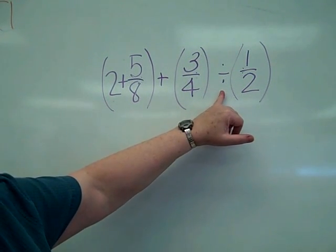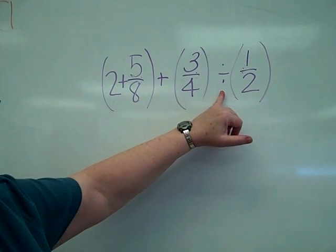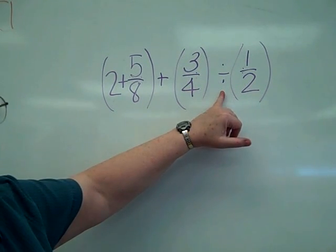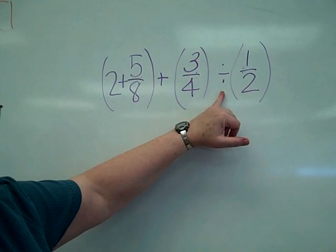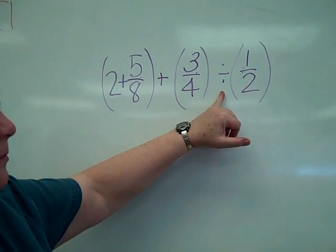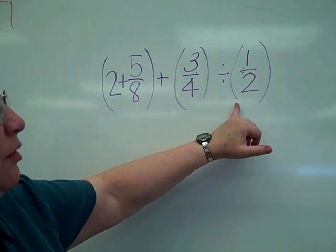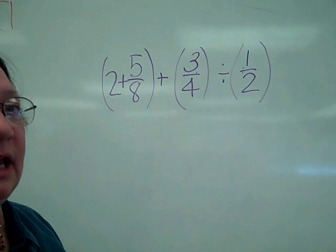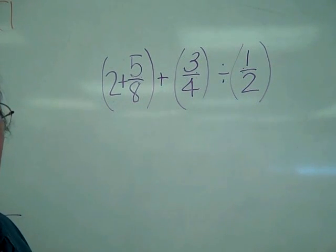Now notice on your calculator when you put the divided by in, it uses a slash, which is the universal division sign. Then parenthesis, 1 divided by 2, end parenthesis. Everybody hit pause at this point, and go ahead and see if you will get the correct answer.